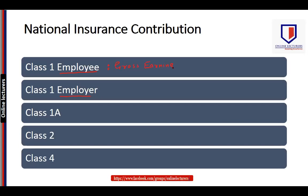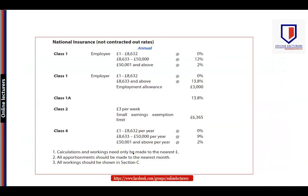The definition of earnings is the same for both employer and employee Class 1 NIC. As far as Class 1A is concerned, that is the responsibility of the employer and is also based on earnings, but the definition of earnings is different. Class 2 and Class 4 are both paid by a self-employed taxpayer. So in summary: Class 1 and Class 1A are based on employment, and Class 2 and Class 4 are based on self-employment.